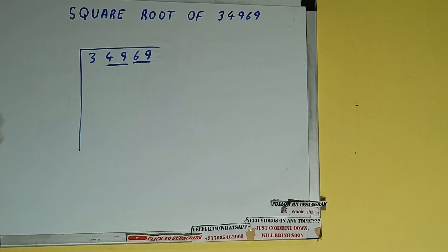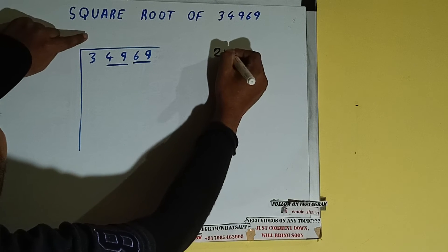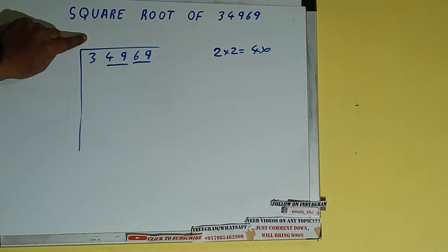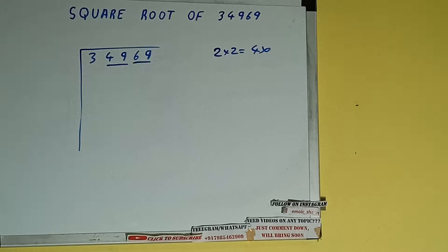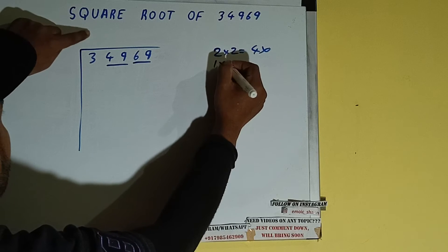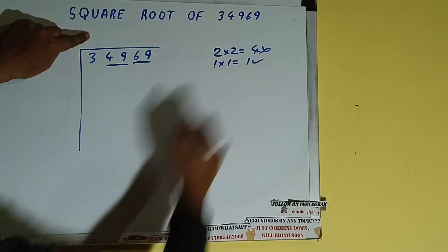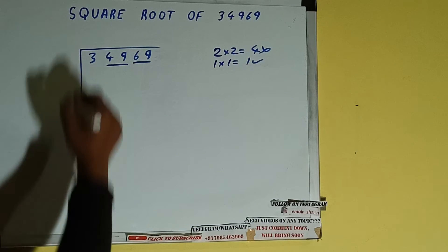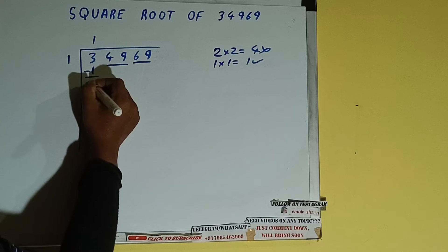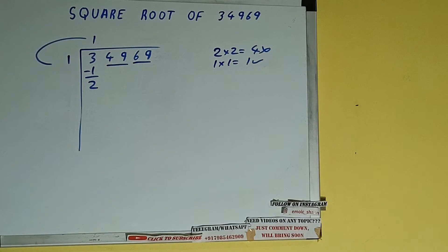The rule is whatever number we write here, we need to write here also. So if we write 2 here and 2 here, it will be 4 which is greater than 3, so we cannot take it. If we write 1 here and 1 here, it will be 1 which is good to take.